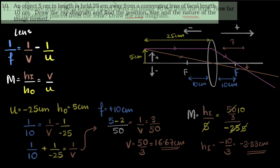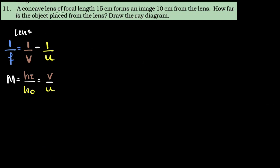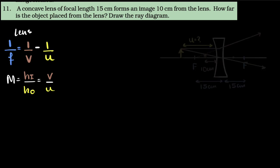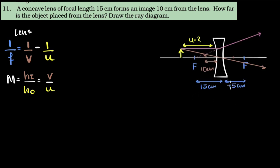Let's try the next problem. We are given a concave lens of focal length 15 centimeters that forms an image 10 centimeters from the lens. How far is the object placed from the lens? Draw the ray diagram. For a concave lens, a parallel ray of light diverges away, appearing to come from the principal focus. Another ray of light through the optic center goes undeviated. The two rays appear to come from the same point — that's where the image is formed.